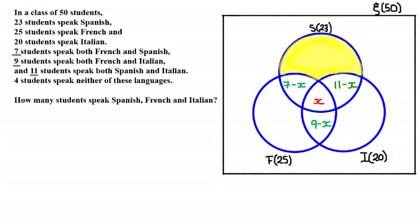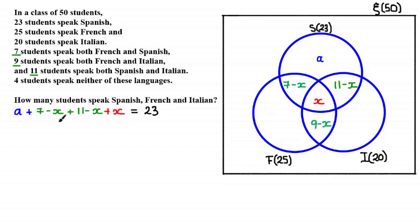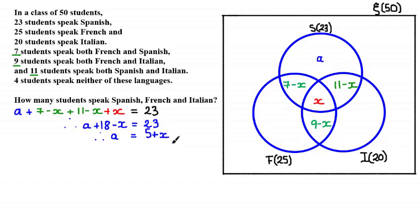Now let's fill in the outer parts of the Venn diagram. Let A be the number of students who only speak Spanish. We can form an equation: A plus 7 minus X plus 11 minus X plus X equals 23, since those are all elements in the Spanish set. Simplifying gives A plus 18 minus X equals 23, so A equals 5 plus X. We update the Venn diagram accordingly.